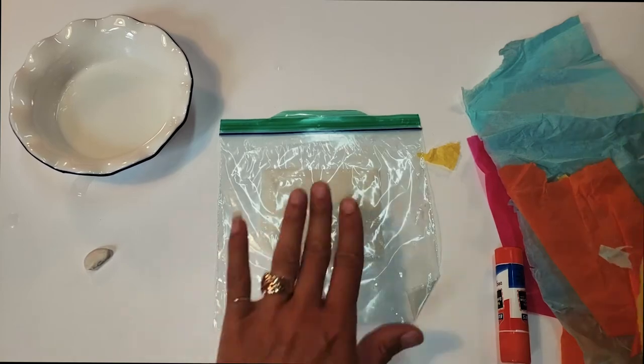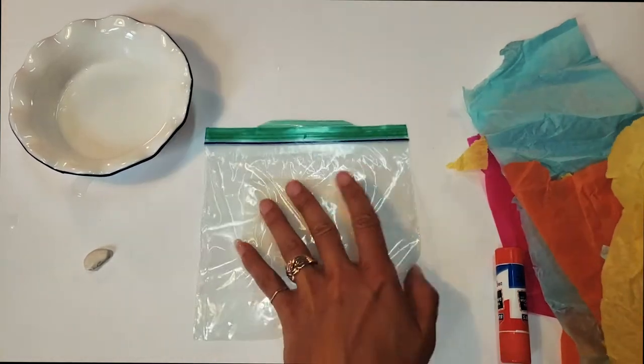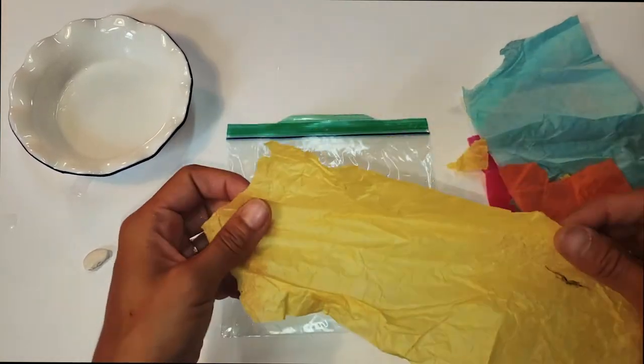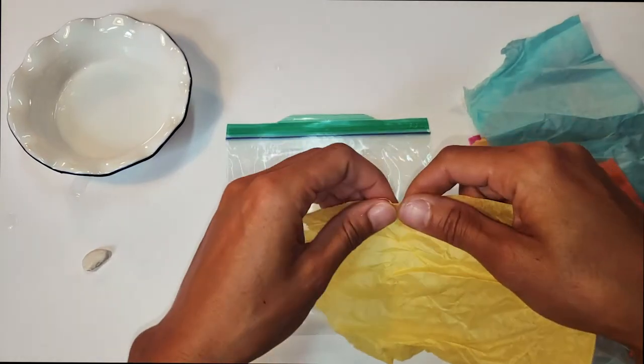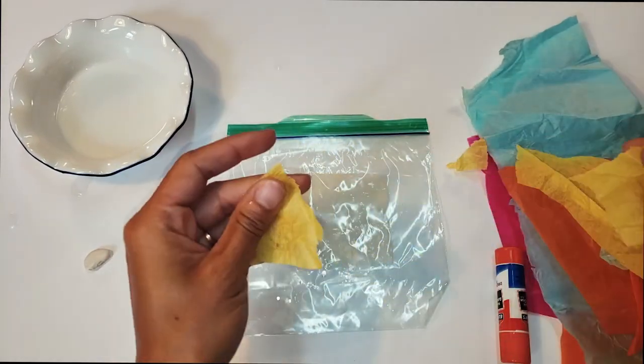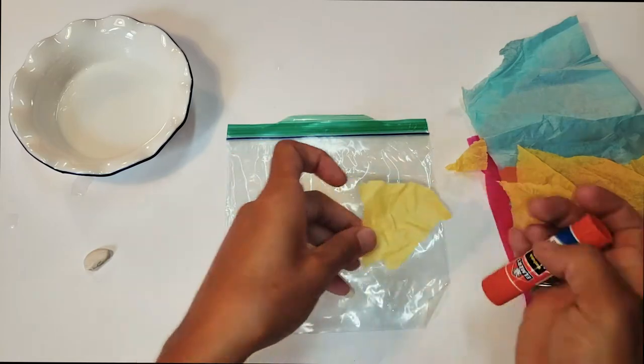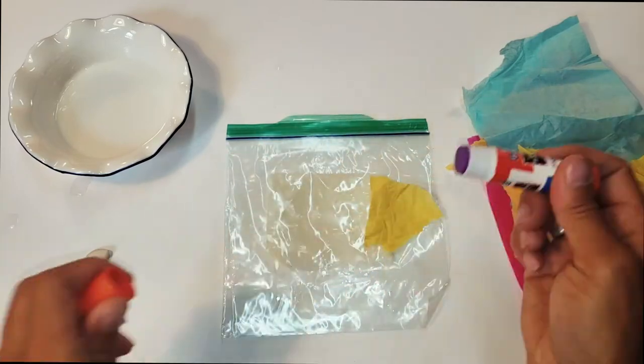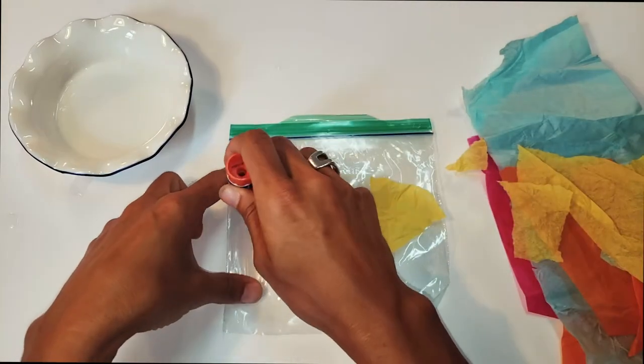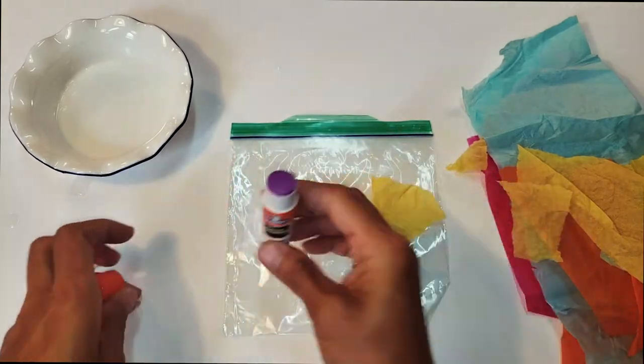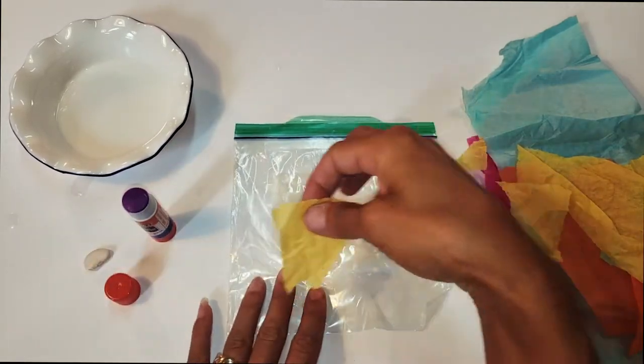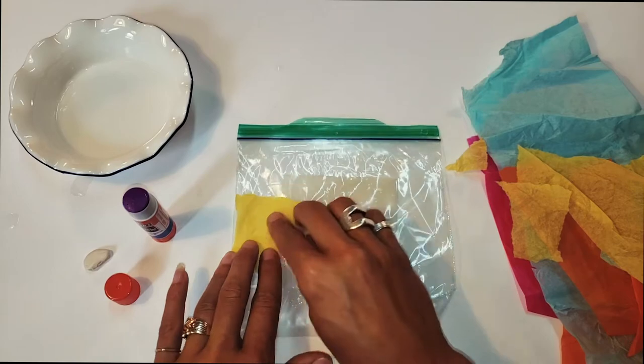The first step is to decorate both or one side of your bag with tissue paper. Start with a straight side and tear off a piece that feels small enough to glue onto the side of your bag. Open your glue stick, add a little to the bag, and then line up the straight side with the straight side of the bag.